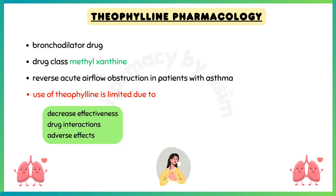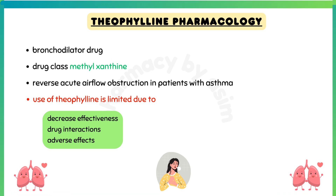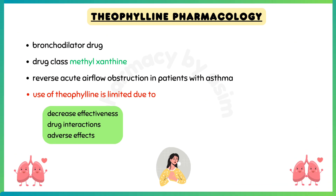Theophylline is a bronchodilator drug belonging to the drug class methylxanthines. It is used to reverse acute airflow obstruction in patients with asthma. Active metabolites of theophylline are caffeine and 3-methylxanthine. Use of this drug is limited due to decreased effectiveness, drug interactions, and adverse effects.